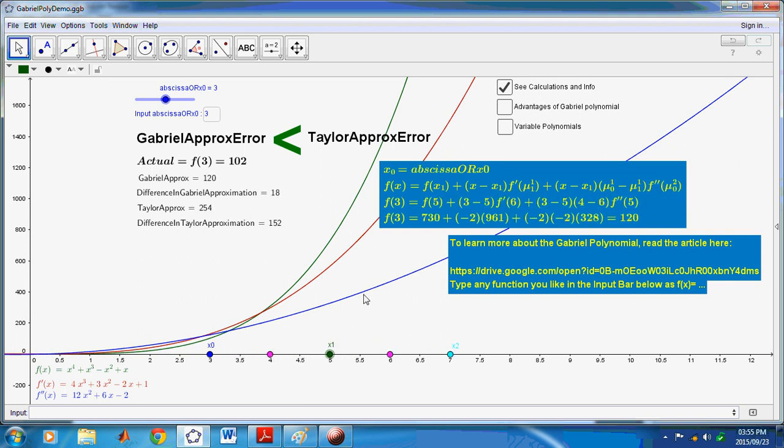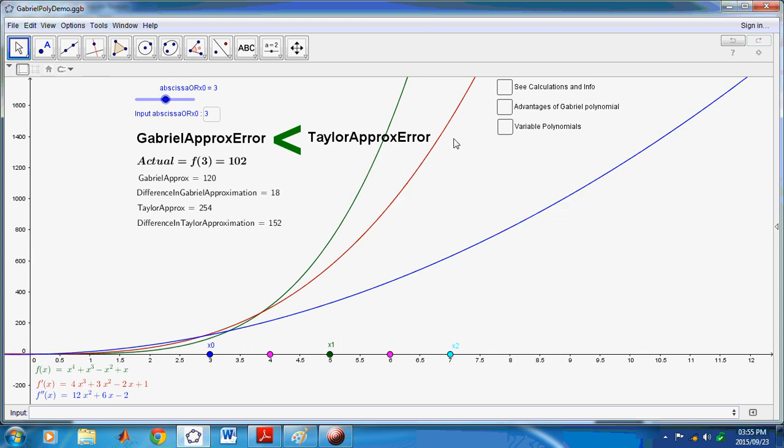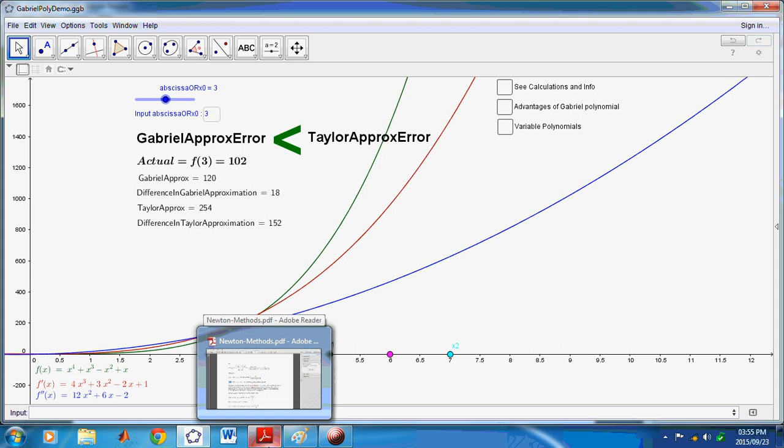So, you know, for example, if somebody was programming the sine tables or the logarithms into a calculator, you could easily use the Gabriel polynomial with greater advantages in terms of speed and accuracy over the Taylor polynomial. Okay, and so, that's pretty much all I wanted to demonstrate for this video.